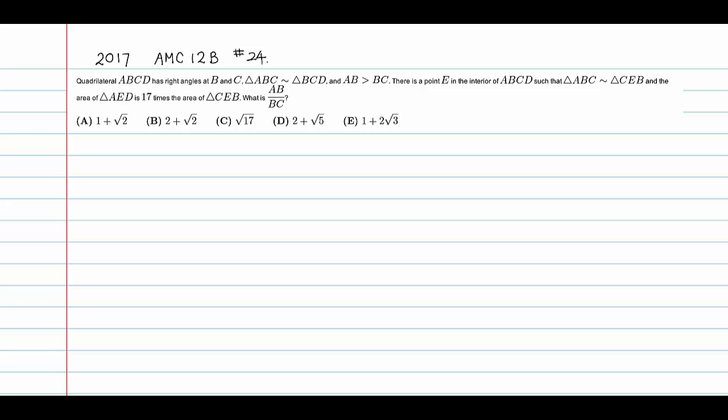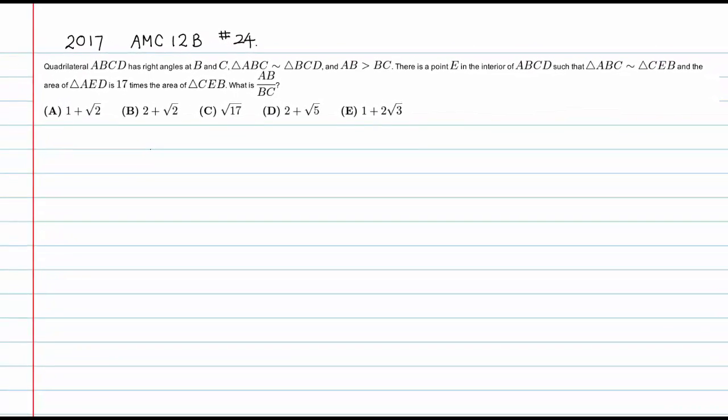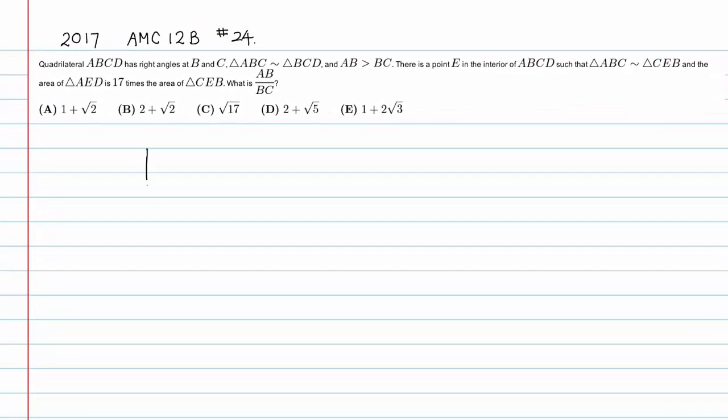This is 2017 AMC 12B question 24. Quadrilateral ABCD has right angles at B and C, and triangle ABC and triangle BCD are similar.